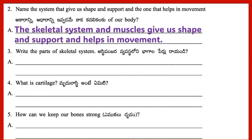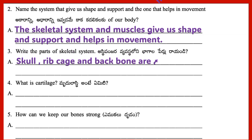Question 3: Write the parts of the skeletal system. Answer: Skull, ribcage and backbone are the parts of the skeletal system.